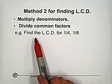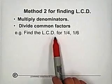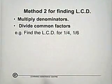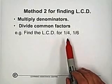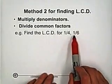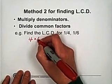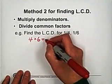Let's try this example. Find the LCD for 1 over 4 and 1 over 6. Multiply denominators. We have 2 fractions, 2 denominators. Multiply 4 with 6, so we get 24.